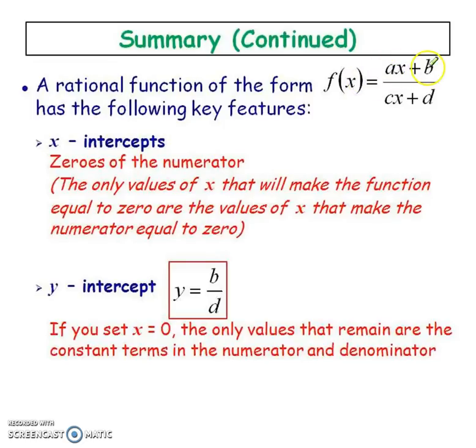If you want your x-intercepts, you have to look at the top because this is going to become a zero and this disappears when it multiplies to the other side. So your x-intercepts are going to be negative b over a. And then if you want your y-intercepts, you always plug in a zero for your x's. So these guys disappear and it ends up to be only these two that end up to be your y-intercept.